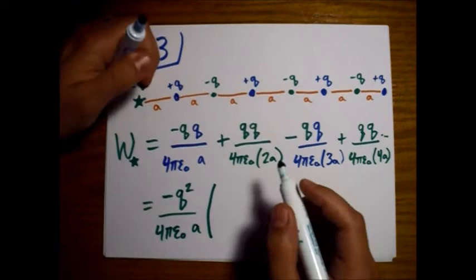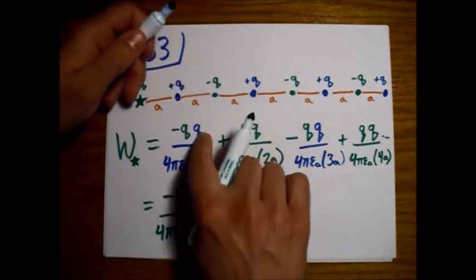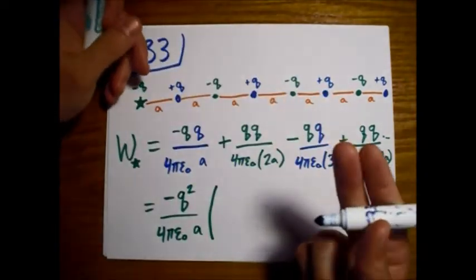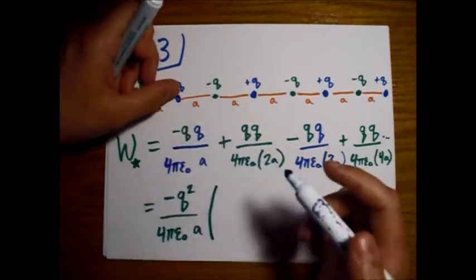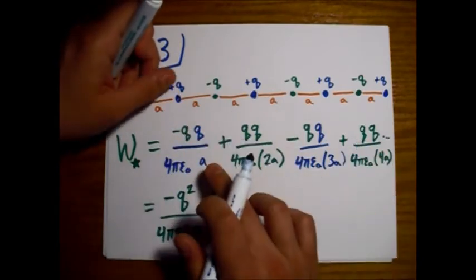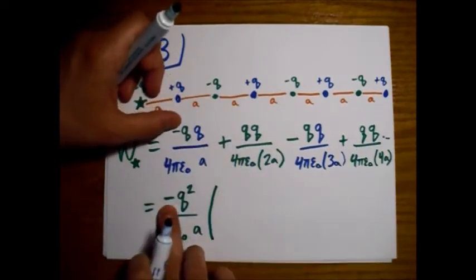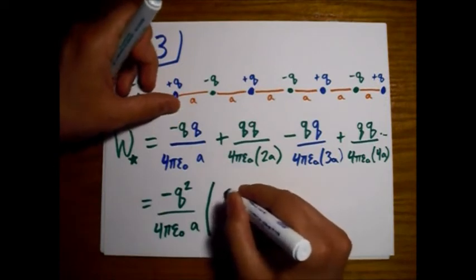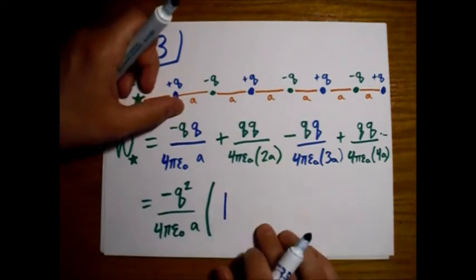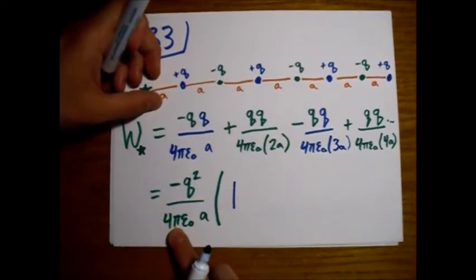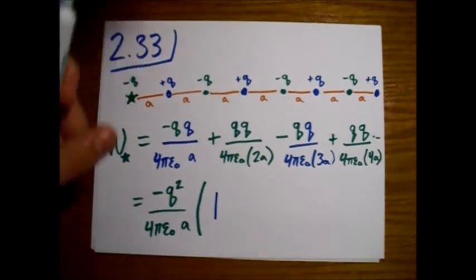So what are we left over with? We have this first term. I'll continue writing in blue for now. And we factored out the minus right here, so it's a positive. So we have basically a 1. This factor out front is equal to this. Alright? So 1.